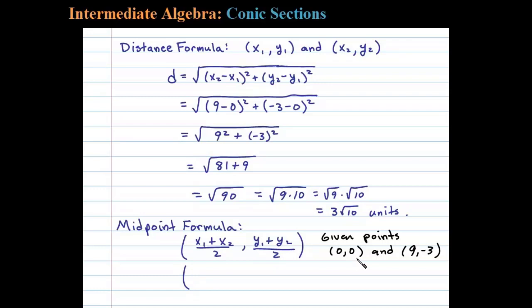Remember, the given points were (0,0) and (9,-3). Adding the x values, we get (0+9)/2. For the y values, (0+(-3))/2 gives us the midpoint: (9/2, -3/2).